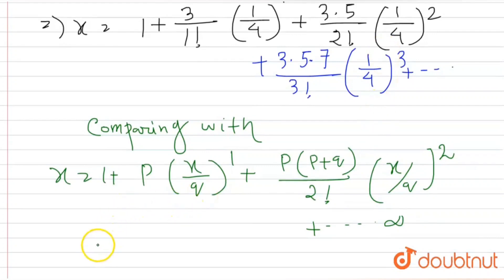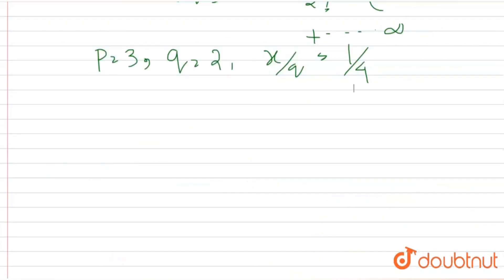p is equal to 3, q is equal to 2, and x by q is equal to 1 by 4. Therefore, we know the value of q. Therefore, x is equal to 1 by 4